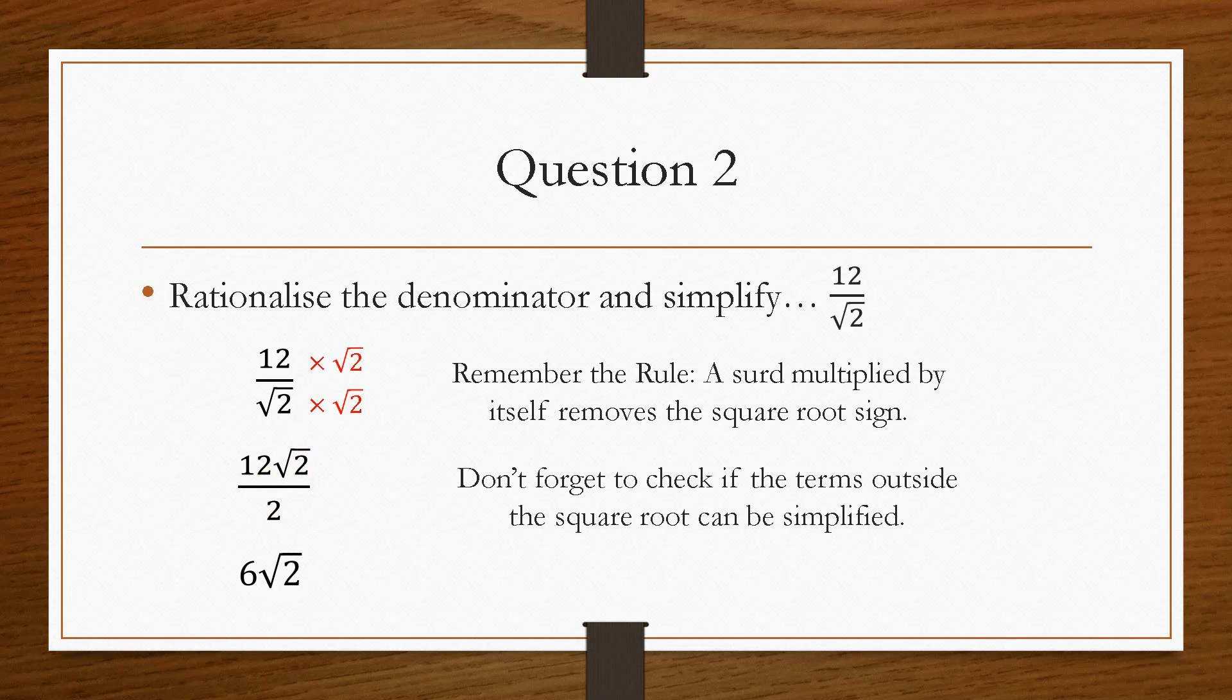I'll put links in the description to solving surds and introduction to surds. But in terms of rationalising a denominator, that is pretty much all you have to know is exploiting that rule. That a surd multiplied by itself, the square root sign disappears. It removes it completely.